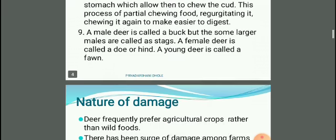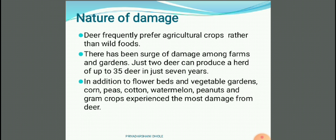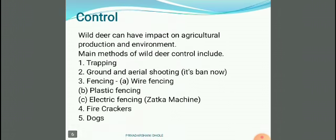Nature of damage: deer frequently prefer agricultural crops rather than wild foods. There has been a surge of damage among farms and gardens. Just two deer can produce a herd of up to 35 deer in just seven years. In addition to flower beds and vegetable gardens, corn, peas, cotton, watermelon, peanuts, and gram crops experience the most damage from deer.